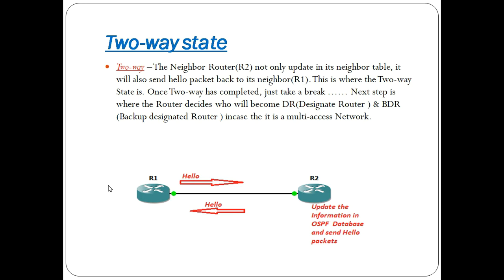In the two-way state, there is an election for DR and BDR. If you have a multi-access network, you have an election of DR and BDR. So this determines the direction of the next step, dividing into part 1 and part 2.